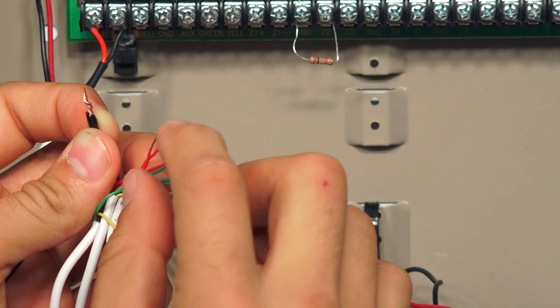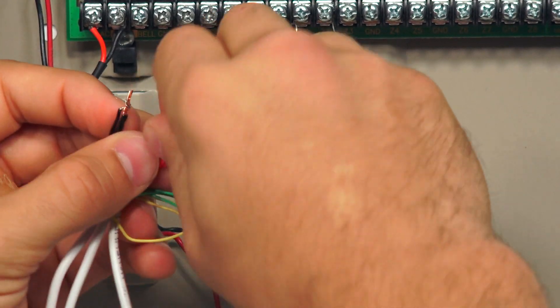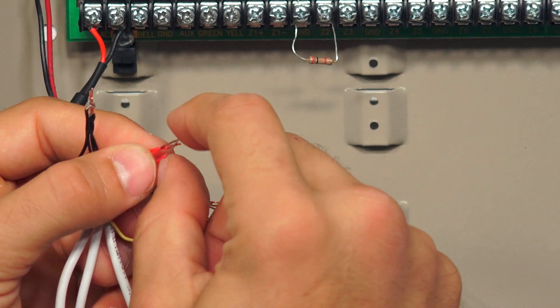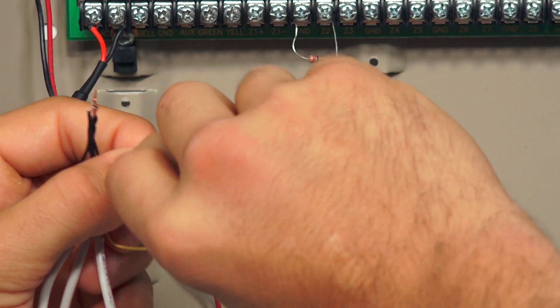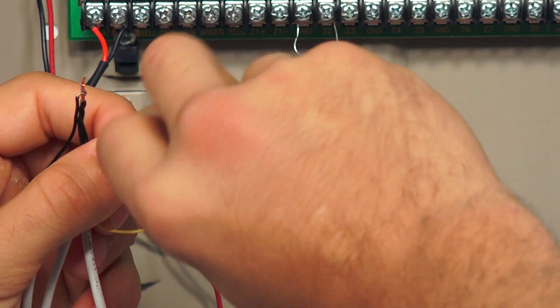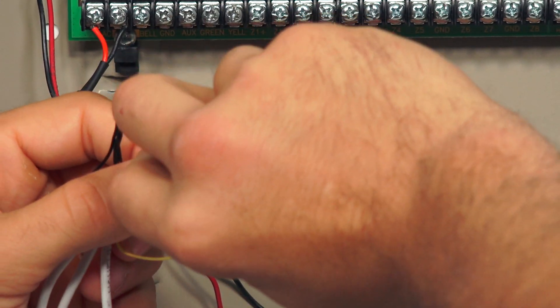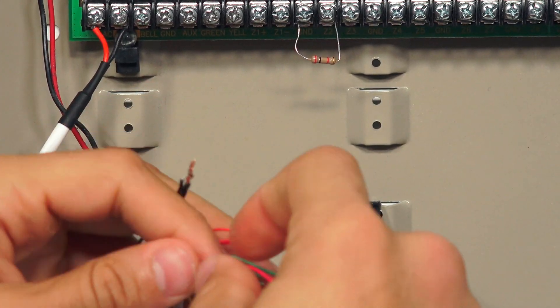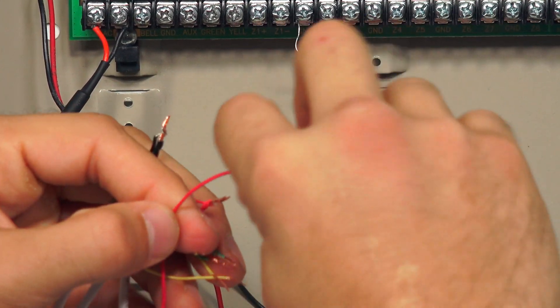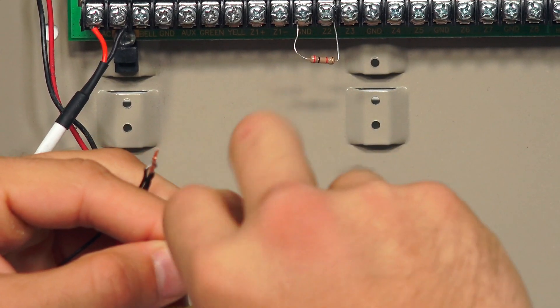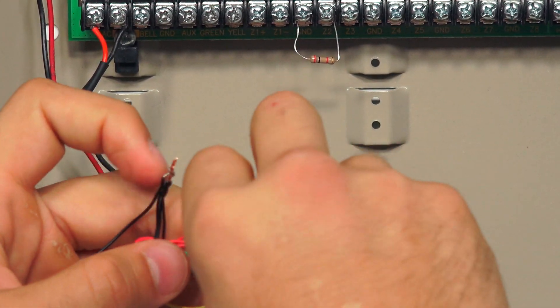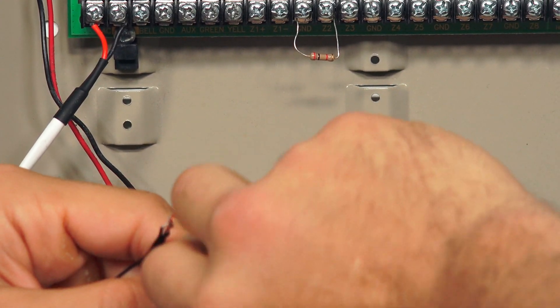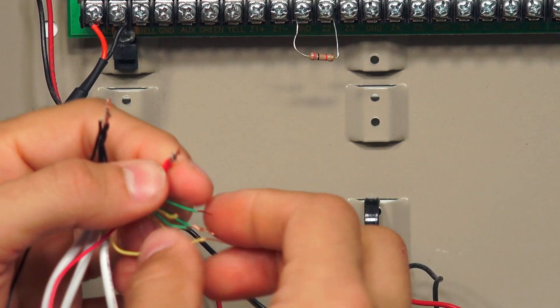So next, I'm taking the red wires, just going to place them together. Twist them around. We'll take our red wire from our communicator right here. I'll lay this next to it, twist it around, make sure it's nice and stable.